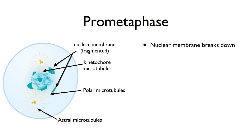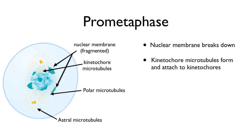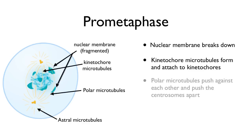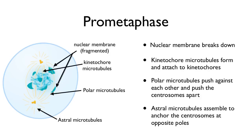Here's prometaphase. You're going to see the nuclear membrane breaking down — it disintegrates, and the lipids break apart into little vesicles you can't see under the light microscope. The kinetochore microtubules form and start to attach to the kinetochores of each of the sister chromatids. Polar microtubules function to push the centrosomes apart so they move to opposite poles. The astral microtubules assemble and anchor the centrosomes at opposite poles. Prometaphase actually involves a lot of important steps.